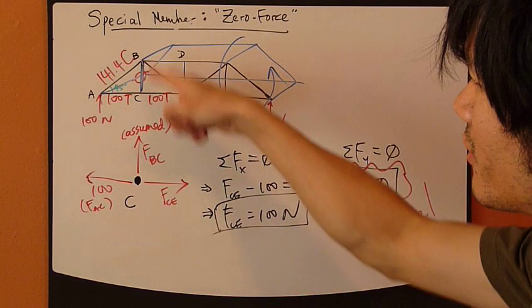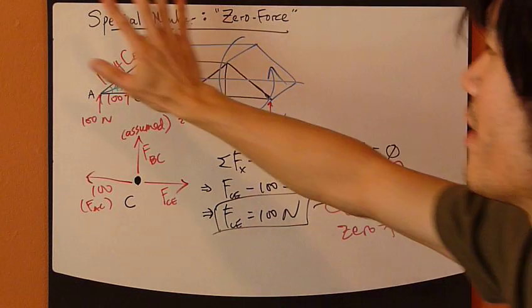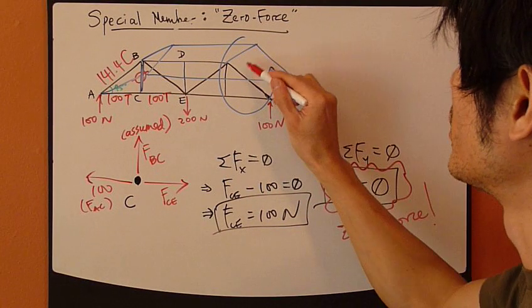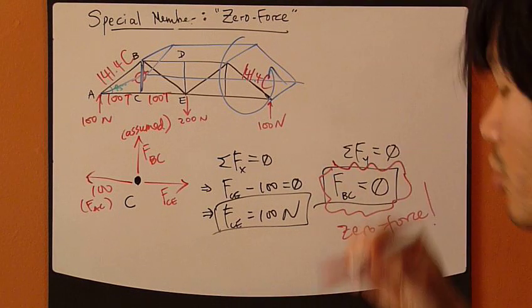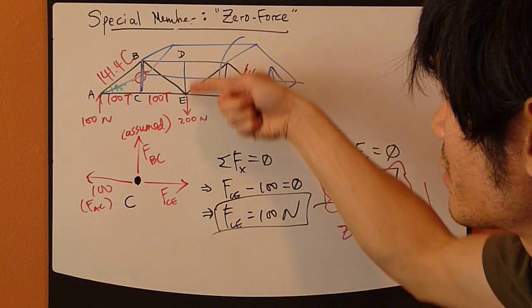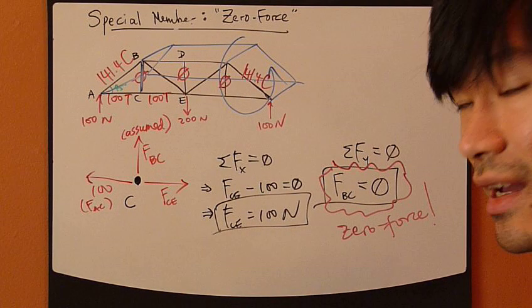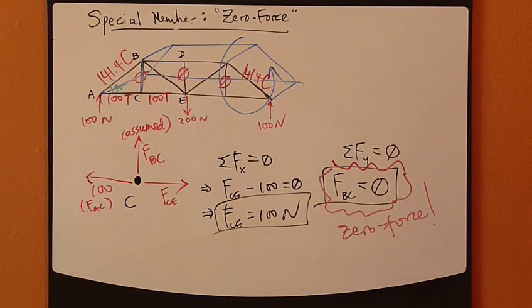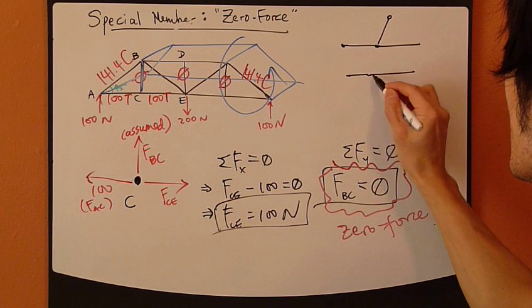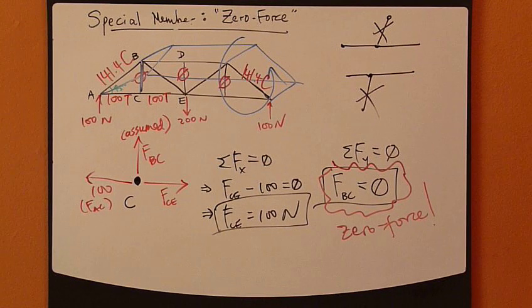BC is zero force member. And then you can proceed into the next joint, joint B, and move on to the other joint. Once you've figured out all these forces in one half the truss, then you can just mirror image it. This would be 141.4 compression and so on. And if you actually go through the calculations, you will also find that this DE is also a zero force member. Obviously, this is zero force also. And one kind of trick that you can tell whether a member is a zero force member is that if it's a part of some kind of T structure, whether it's an upright T or reverse T, then this guy is a zero force.